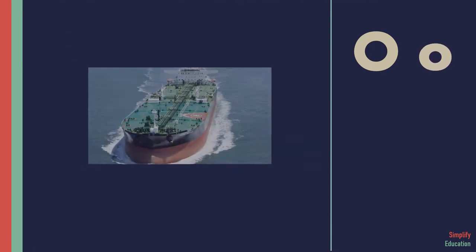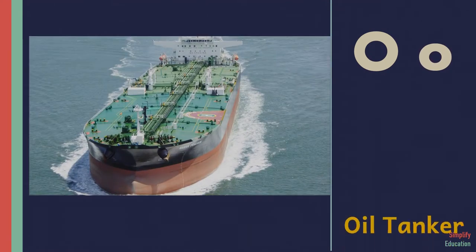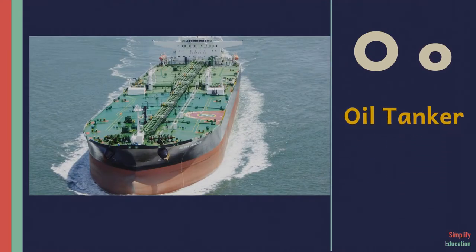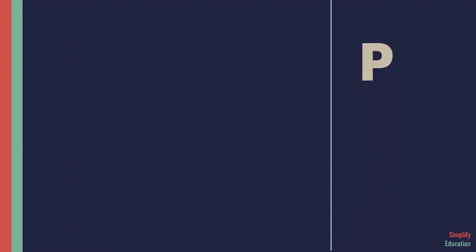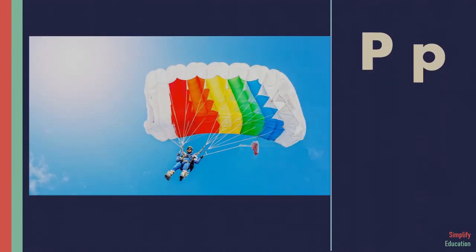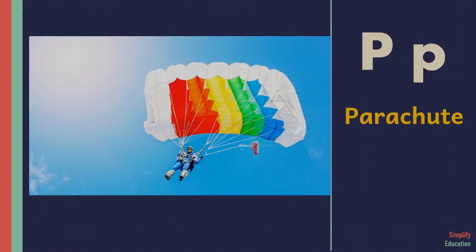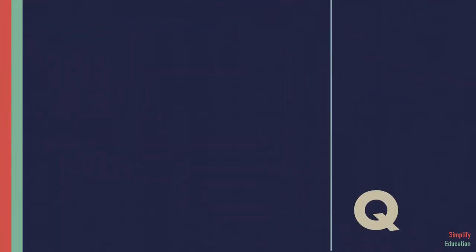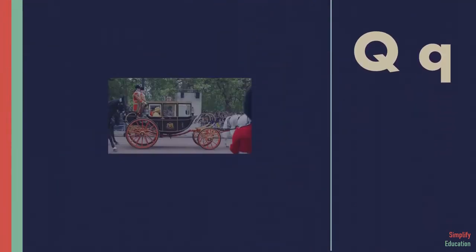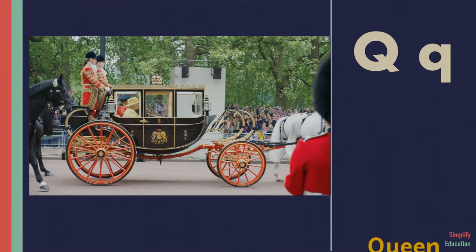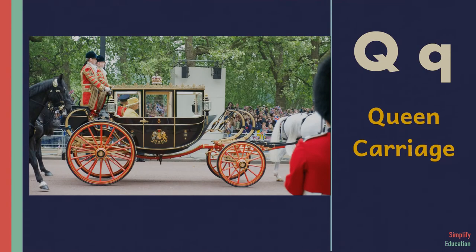O for oil tanker. P for parachute. Q for queen carriage.